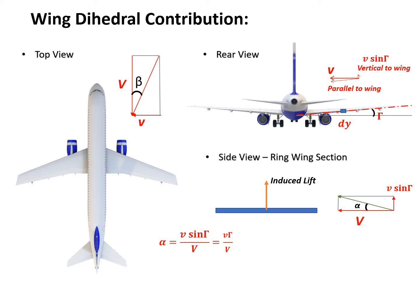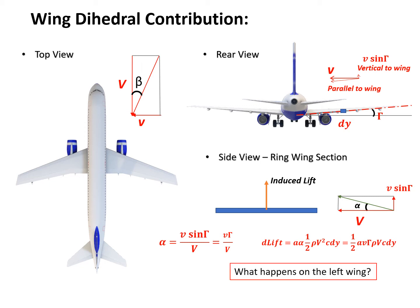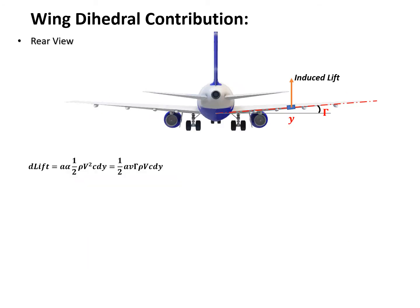So then we can find the induced lift. The incremental lift dL in that incremental section equals a·alpha·(half·rho·V²)·c·dy, where small a is the CL curve slope for that wing section. This gives us the incremental lift. The dL is analyzed through the right side wing — what happens to the left wing is a question for you. We've just derived the induced lift on that incremental section, and now we further calculate the rolling moment contributed from that small section.